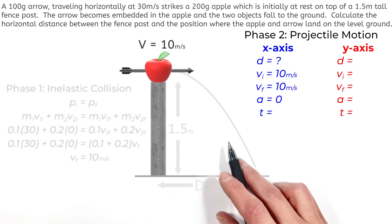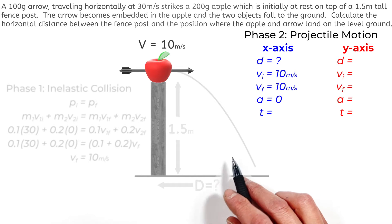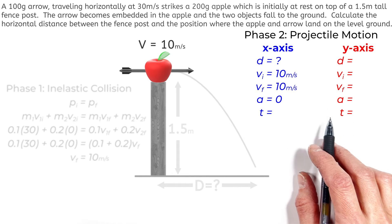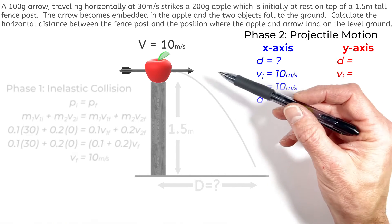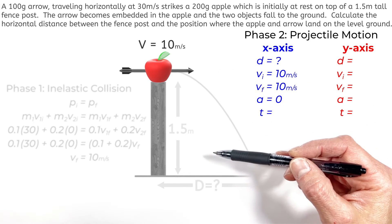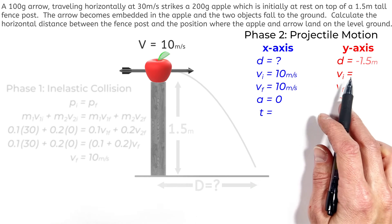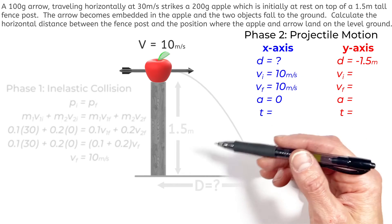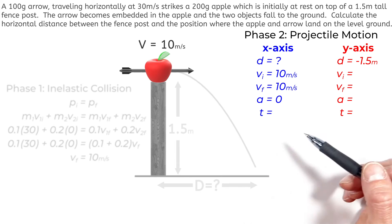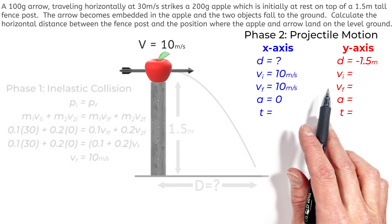Now given what we know in the x-axis, we don't know how long it's going to take the apple and arrow to hit the ground. But by looking at the y-axis, we're going to be able to figure that out. You see, in the y-axis, we know that the apple and the arrow are going to travel downward 1.5 meters. That is the height of the fence post. So I'm going to say that's a negative 1.5 meters. I'm saying it's negative because they're moving downward. And I'm just sticking with the convention that up is the positive direction. Now this is where I see the mistake get made, right here.